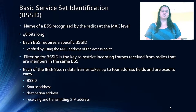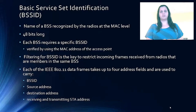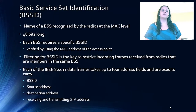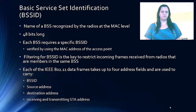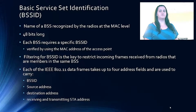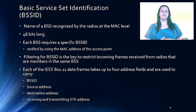Data frames in each of the IEEE 802.11P take up to four address fields and are used to carry the BSSID, source address, destination address, receiving STA address, and transmitting STA address. When the frame is received, it uses the information of an address field to perform address matching for the receiving decision.